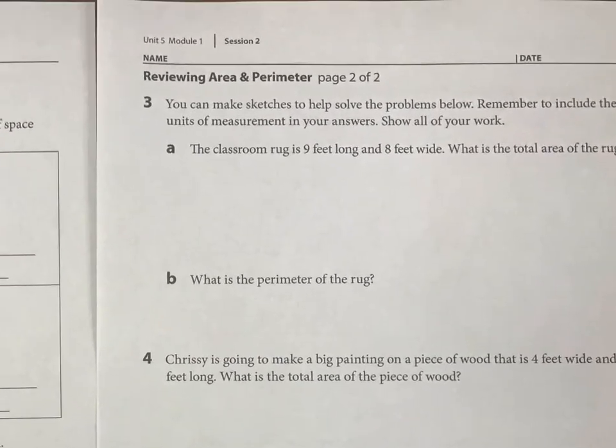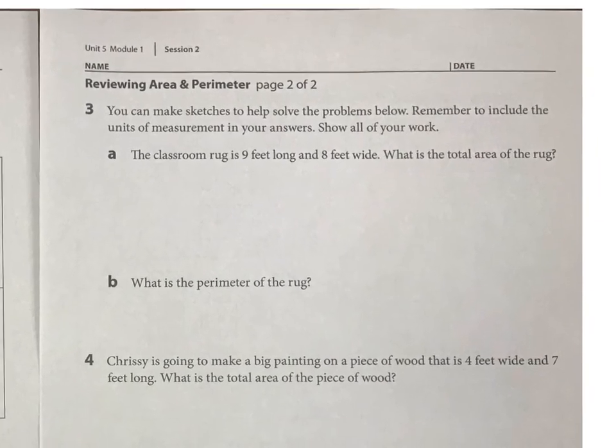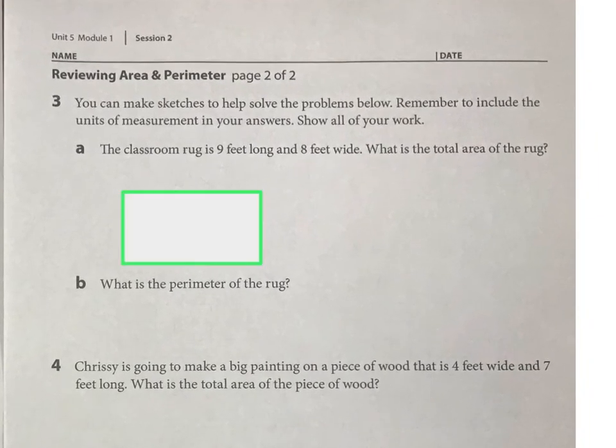So now we just have a few more here for stories. And just to help you, I'd recommend just doing a quick drawing for all of these. But a rug is 9 feet by 8 feet, so what is the area, and then what is the perimeter? And just remember your area will be in feet squared, and the perimeter will just be in feet.